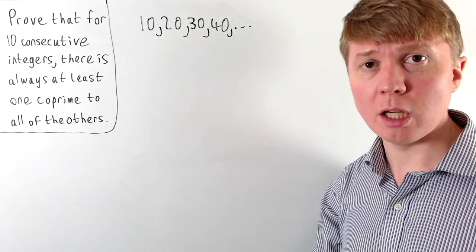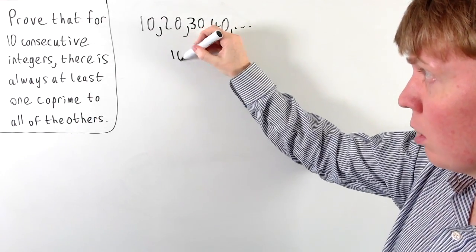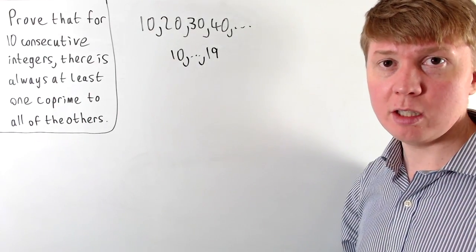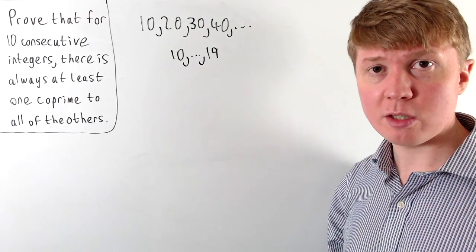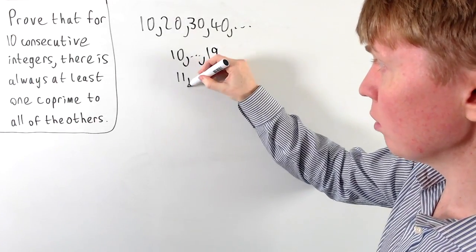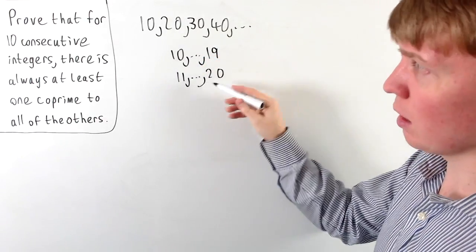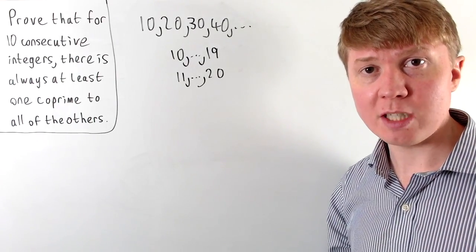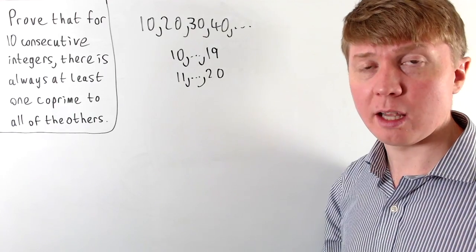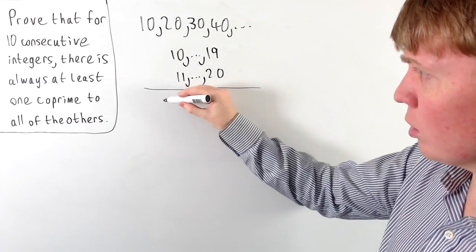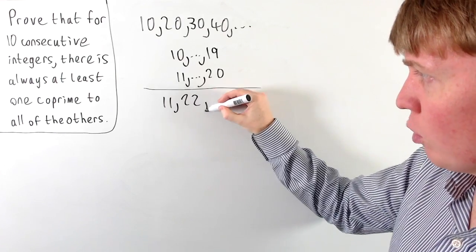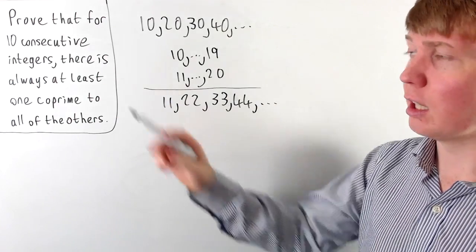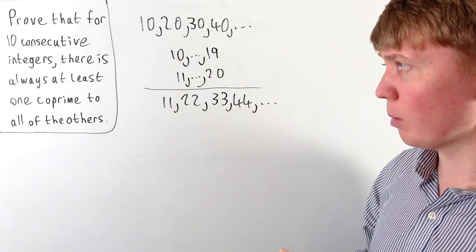However, if we look at 10 consecutive integers, the best we could do would be, for example, 10 up to 19. We've included 10 but missed 20. And if you want to include 20, you go from 11 up to 20 and we've lost 10. So it's not actually possible to have two multiples of 10 in a list of 10 consecutive integers. Similarly, if we wanted two multiples of 11, these are even further apart, so it's not possible to have two multiples of 11 either, because they're just too far apart.